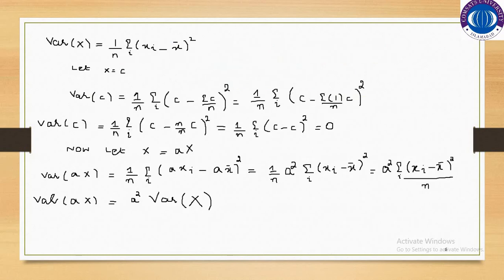Now, as we said that the variance of a constant is equal to 0 — let us prove this mathematically. As we know, variance of x equals 1 over n times the summation of (x minus x-bar) squared. Suppose x equals c, where c is some constant. Then what would be the variance of c?